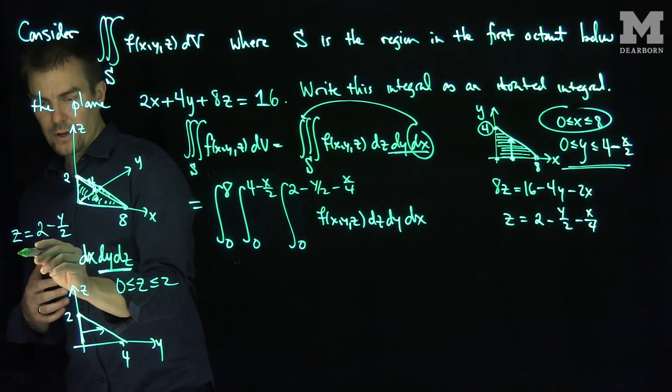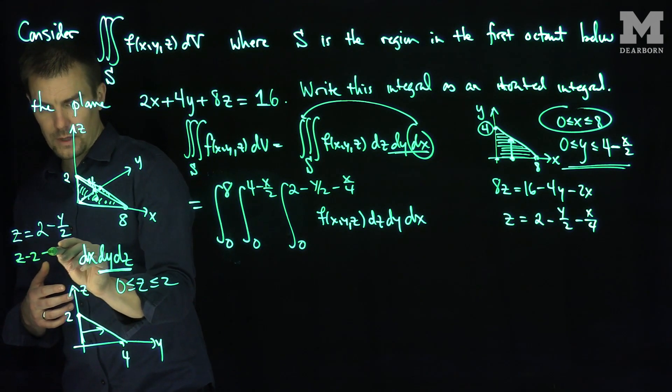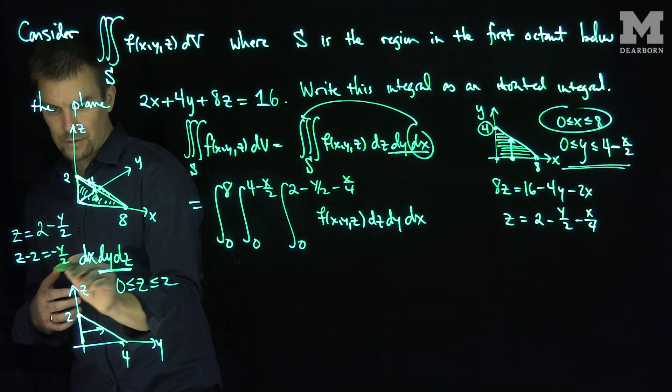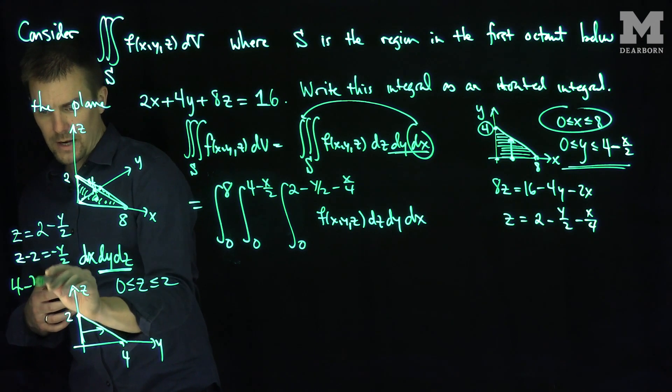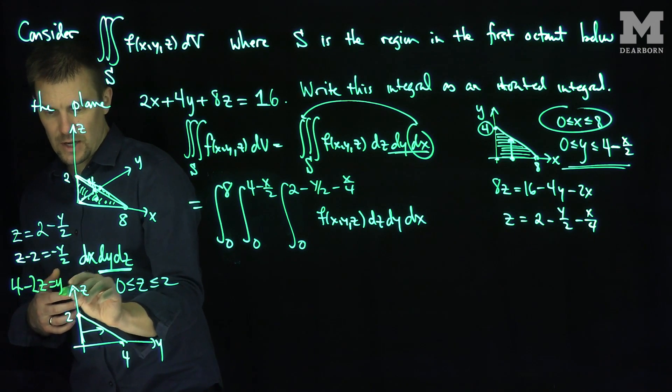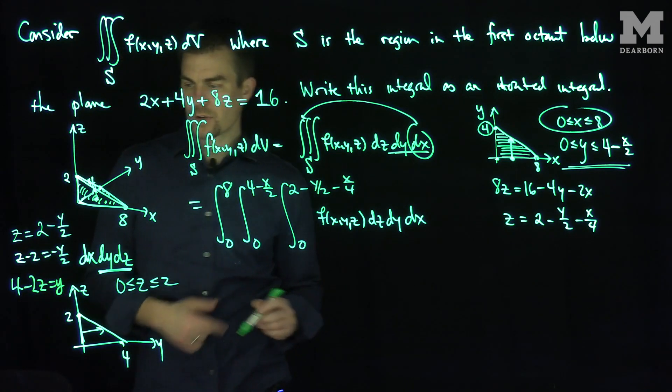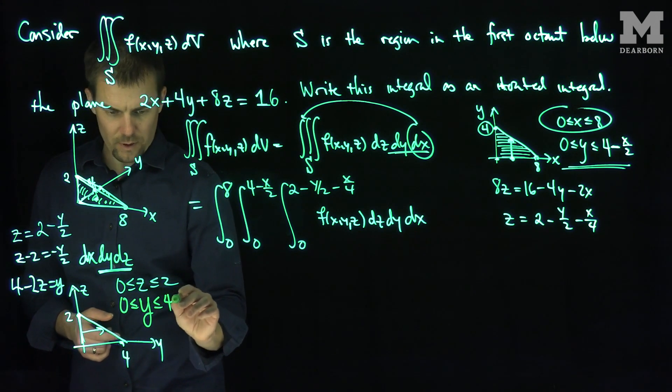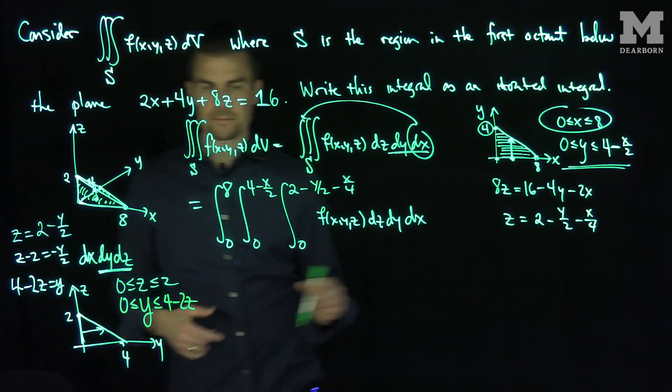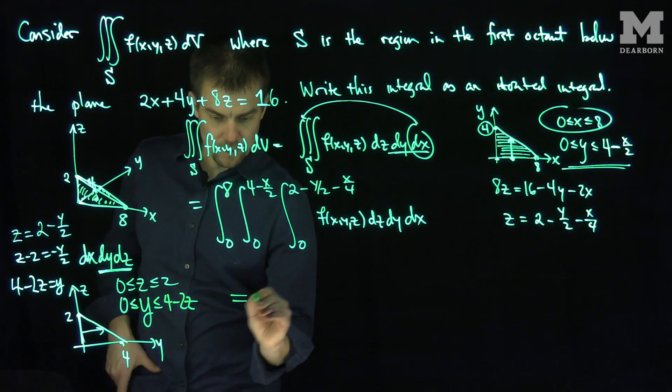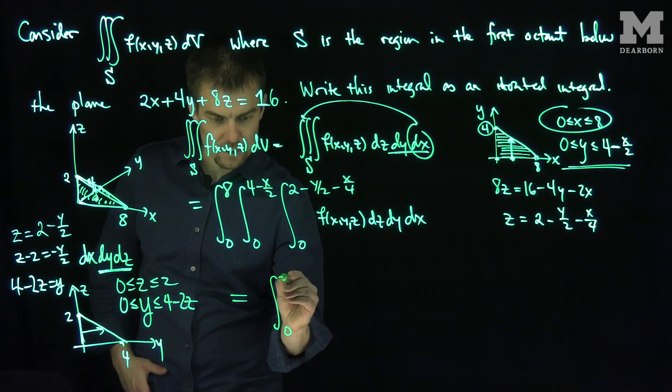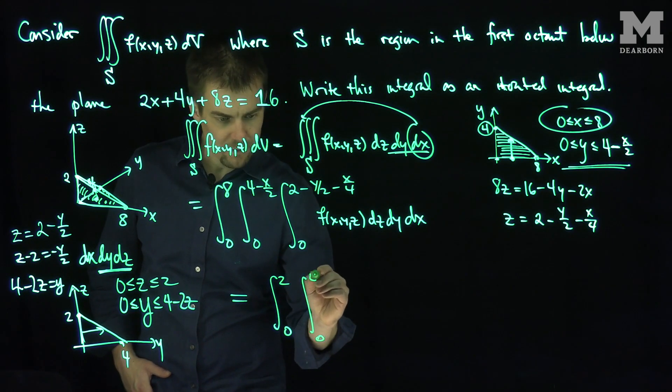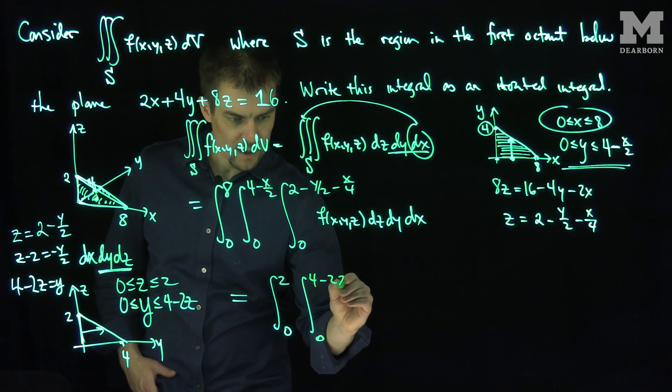I want the equation for y. So if I do a z minus 2 is equal to negative y over 2 multiplied by negative 2. This is going to turn into a what? That negative 2 is going to turn into a 4 minus 2z is equal to y. So that says that y goes between 0 and 4 minus 2z. So this triple integral is also equal to what? z goes between 0 and 2. y goes between 0 and 4 minus 2z.